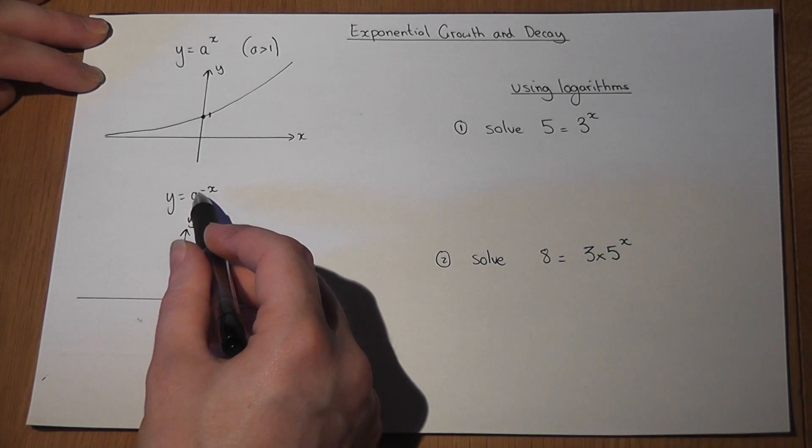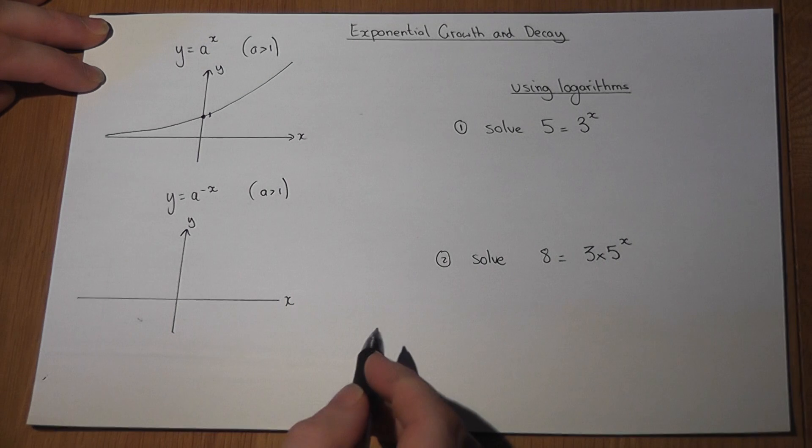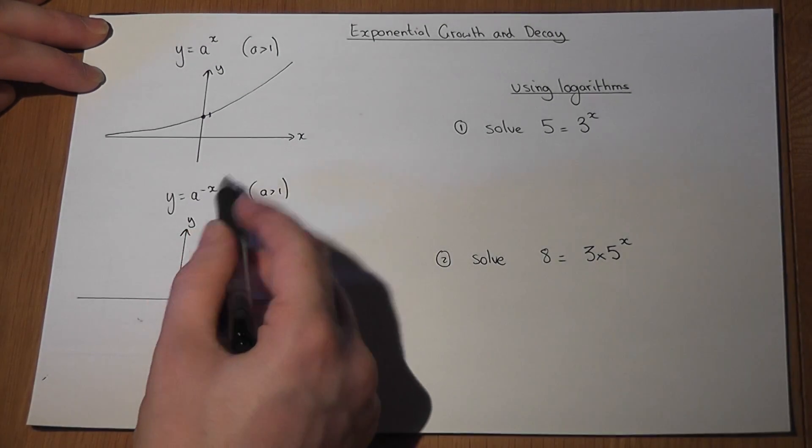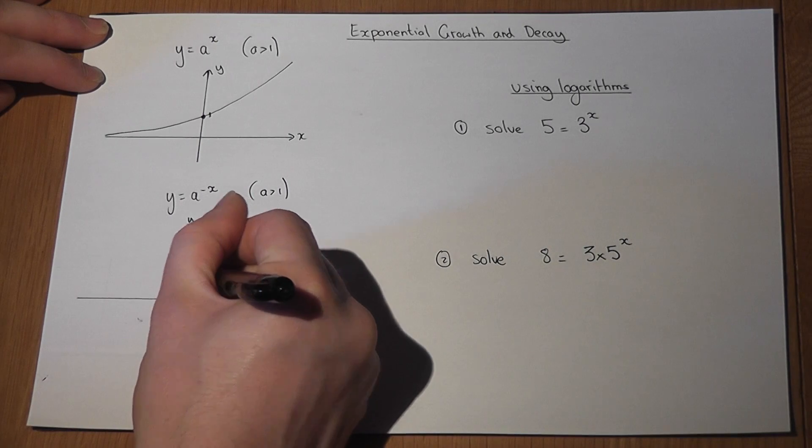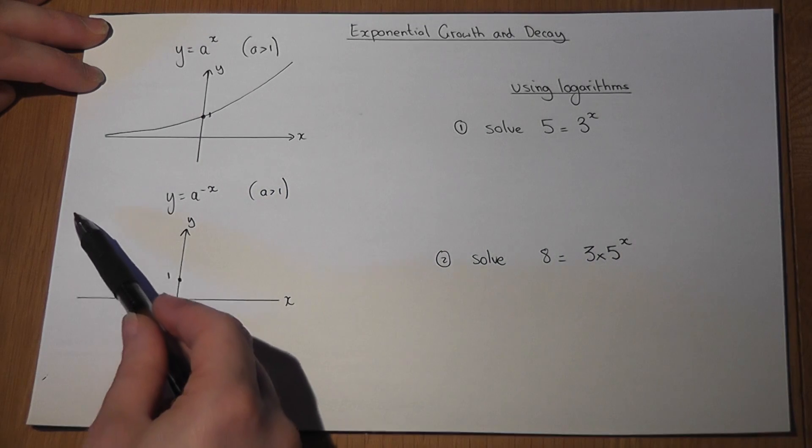Now a to the power of minus x, where again a is bigger than 1, is called exponential decay. And again anything to the power of 0 is 1. So rather than getting larger and larger, the negative power shows a decay.